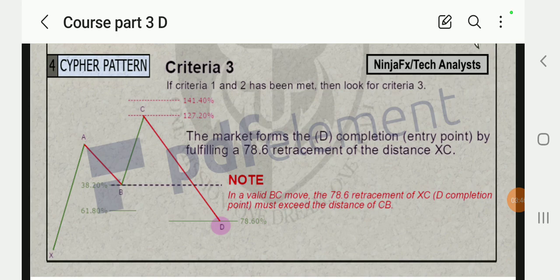If criteria one and two are met, then look out for criteria three. The market forms the D completion entry point by fulfilling 78.6 level retracement of the distance XC. From C going back down to D, covering or fulfilling 78.6 retracement of the XC distance.